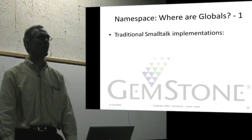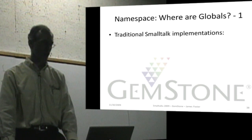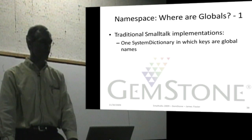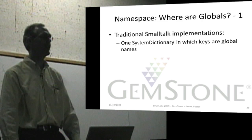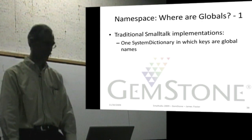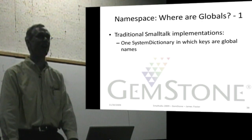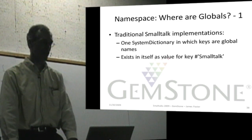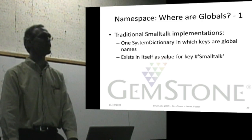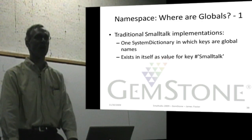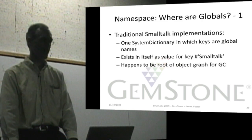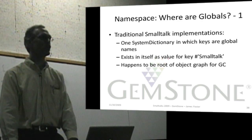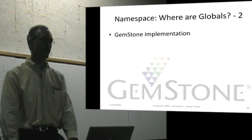So the question is, where are globals found? Well, in traditional Smalltalks, there's one system dictionary in which the keys are global names. And when you compile, it uses that one pre-built, system-recognized global dictionary. And often it exists in itself as Smalltalk. So you can say Smalltalk is a dictionary where the keys are globals and the values are all the objects. And this, in traditional Smalltalks, happens to be the root for the object graph.